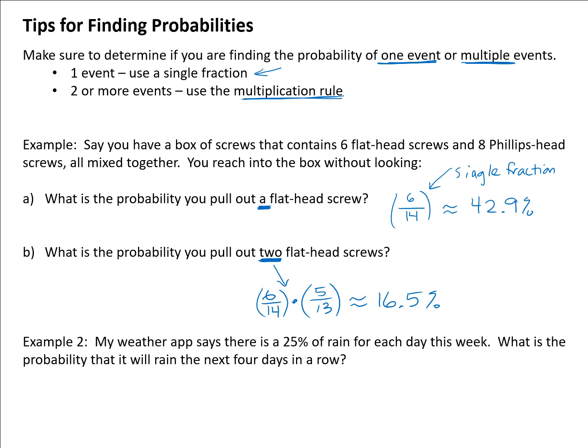The other thing, second example here, my weather app says that there is a 25% chance of rain for each day this week. What is the probability it will rain the next four days in a row? Here we have something happening four days in a row. So we're talking about multiple events, four events happening. We're going to multiply the probability of each.